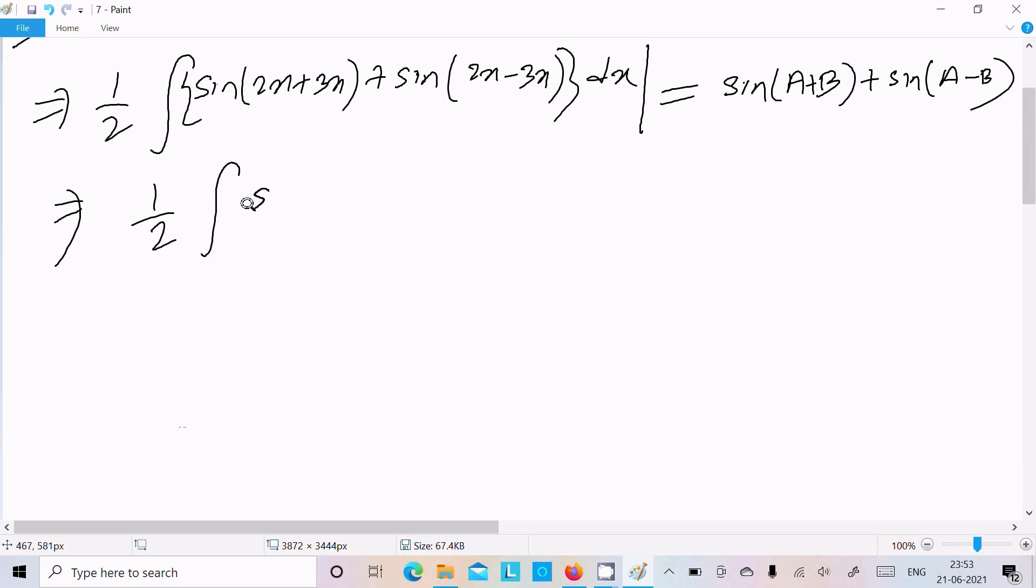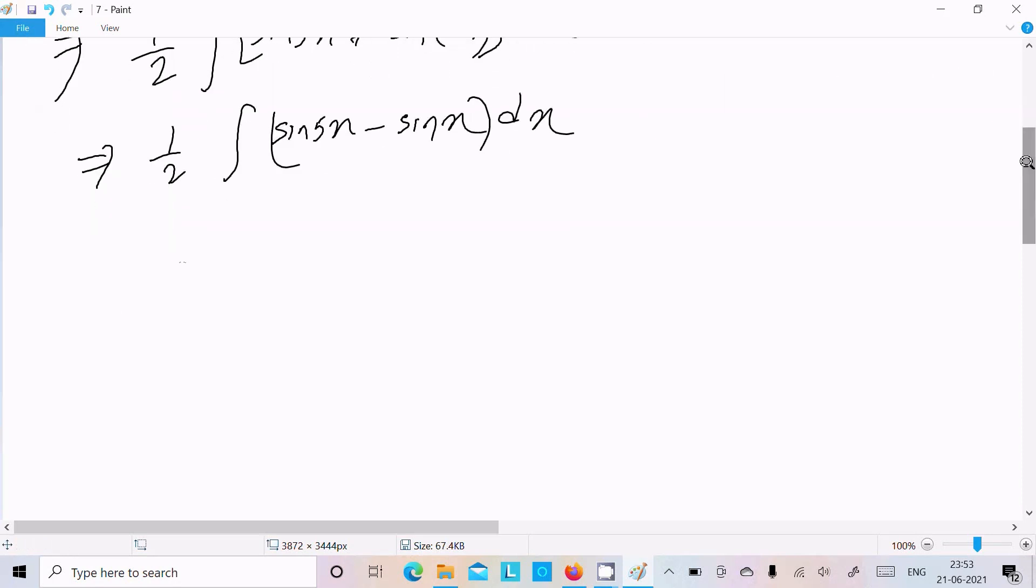1 by 2 integration symbol sin 5x, sin minus x, that is minus sin x, and dx. Here, let's write 1 by 2, separating the integrals: sin 5x minus sin x dx.